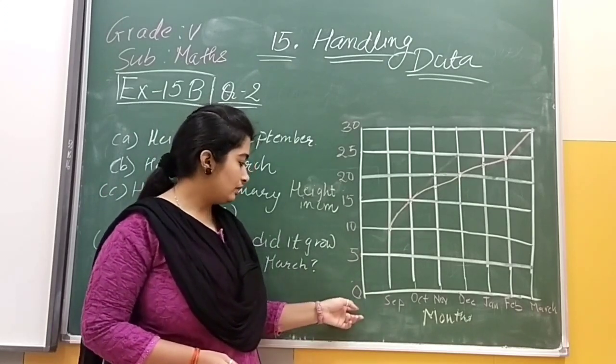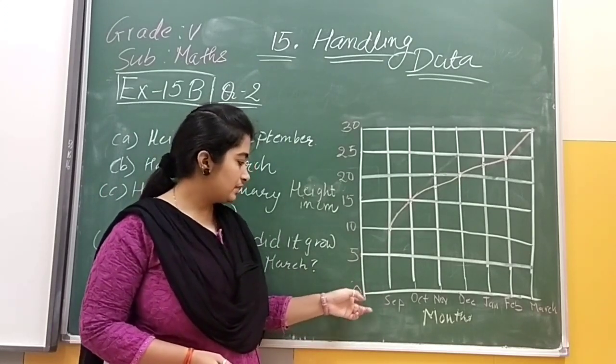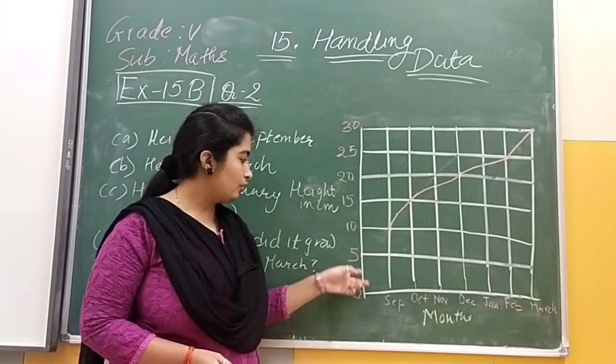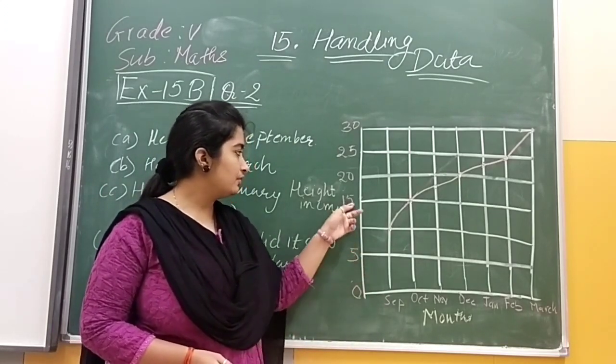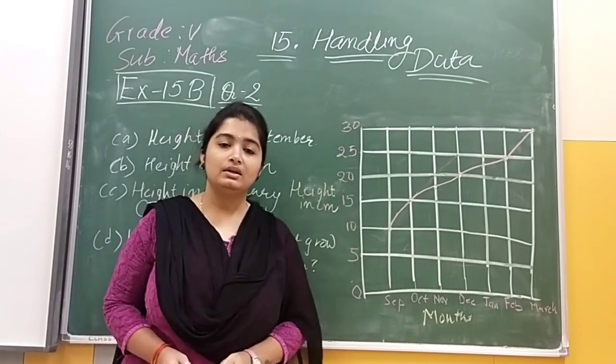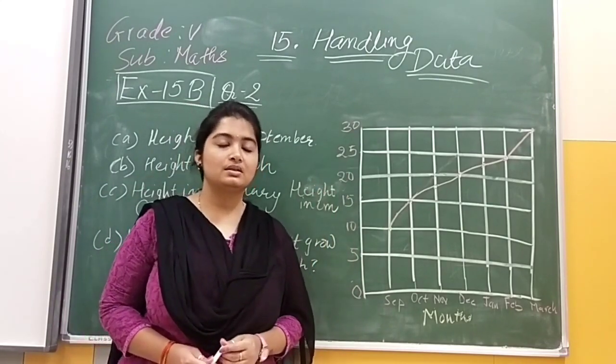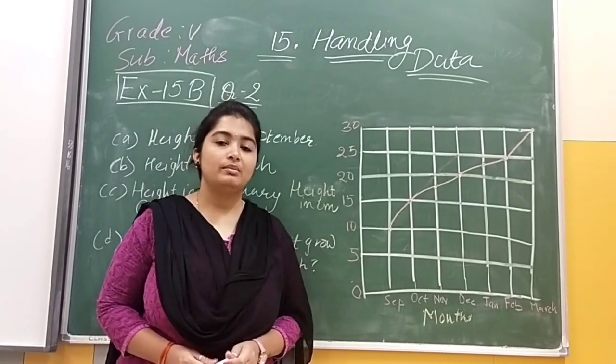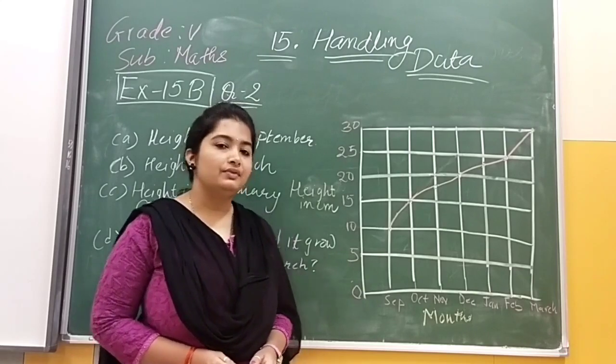His height is given in centimeters — that is 0, 5, 10, 15, 20, 25, and 30. We have to answer the questions using the bar graph.